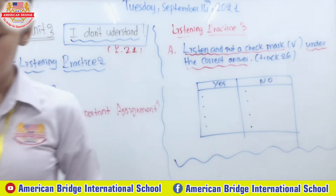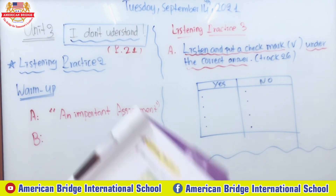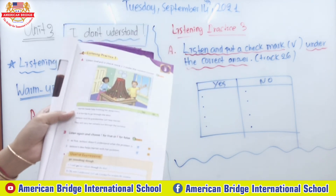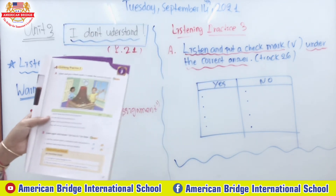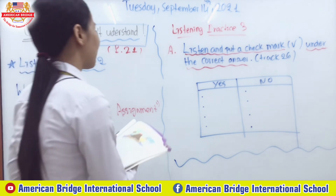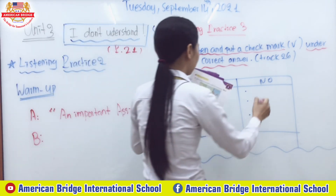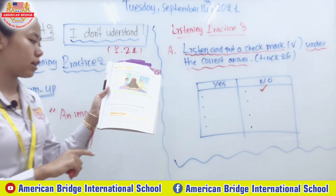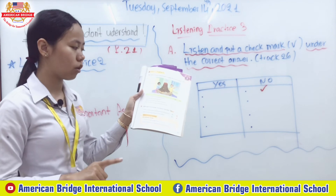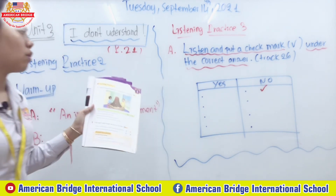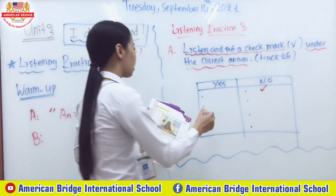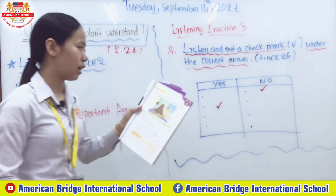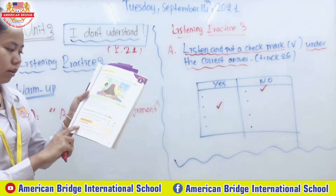Welcome back. Number one: Harriet needs help finishing her assignment — yes or no? The answer is no — she does not need help finishing it; she already finished it. How about the second statement: it is too big to go through the door? Yes, of course — that is correct. So we check yes for the second one.